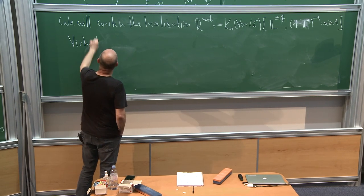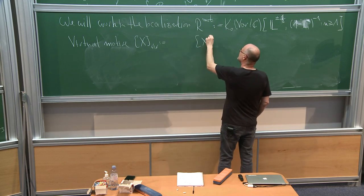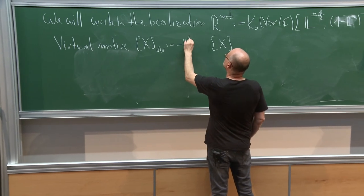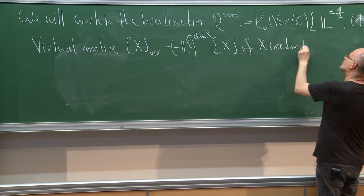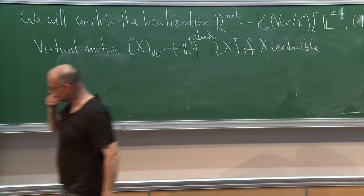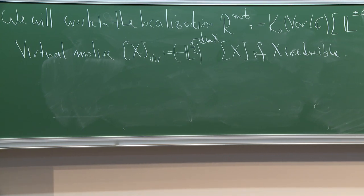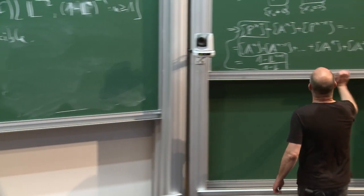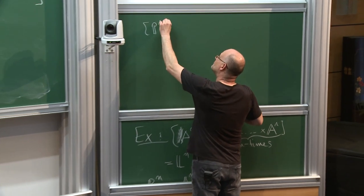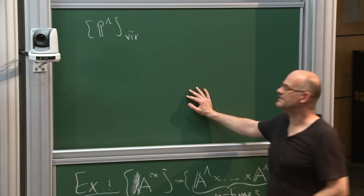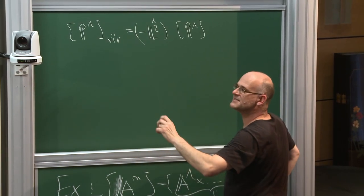The virtual motive of X is defined as a twist of the usual motive: for X irreducible, it is (-L^{1/2})^{-dim X} times the class [X]. As a simple example, the virtual motive of P^1 is computed by taking the usual motive 1 + L and twisting by (-L^{1/2})^{-1}: this gives -L^{-1/2} + (-L^{1/2})^{-1}, which simplifies to -L^{-1/2} - L^{1/2}... let me fix the sign.